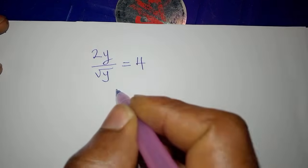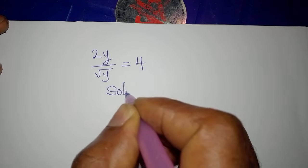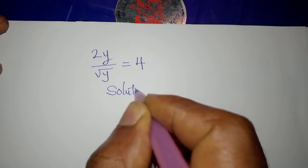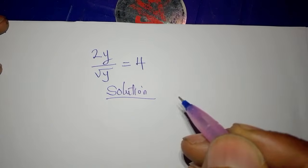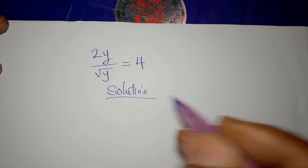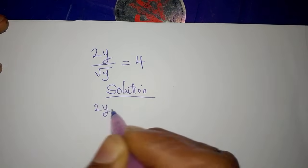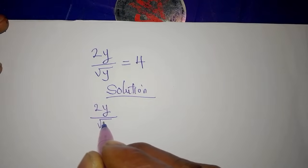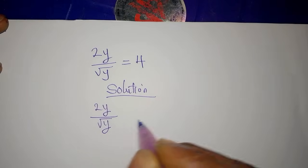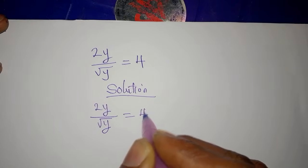Hi everyone. Okay, let's provide a solution here. The equation is 2y over the square root of y equals 4.